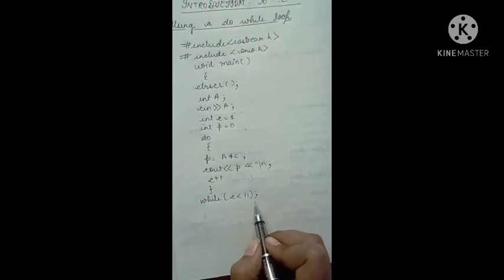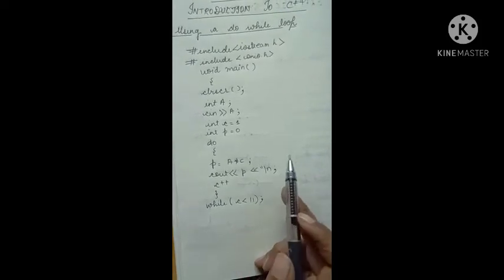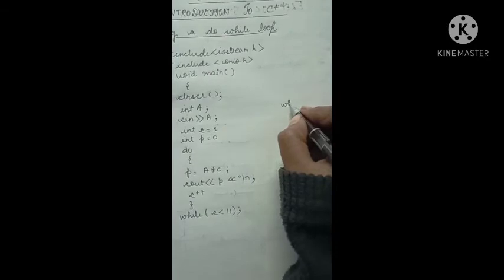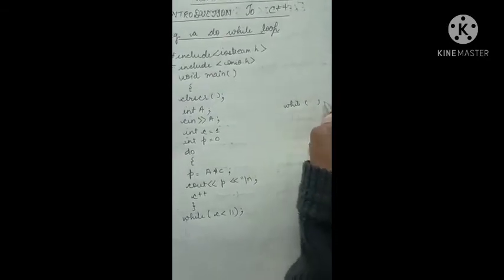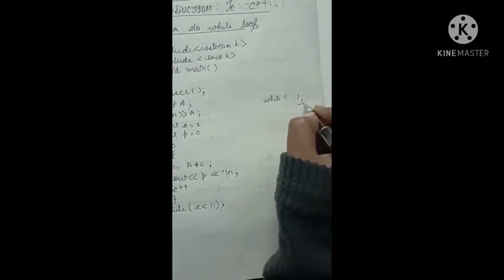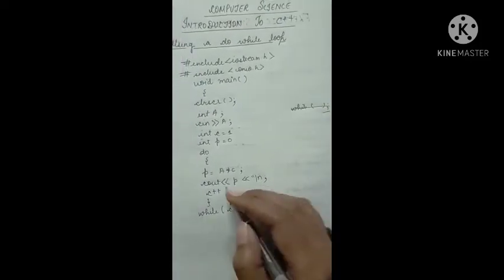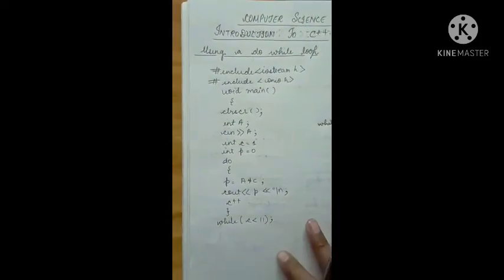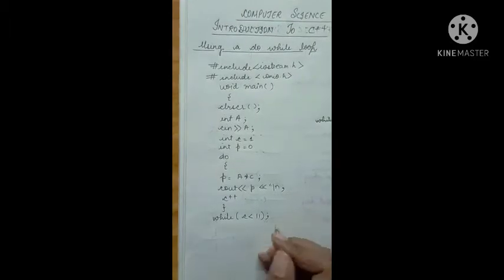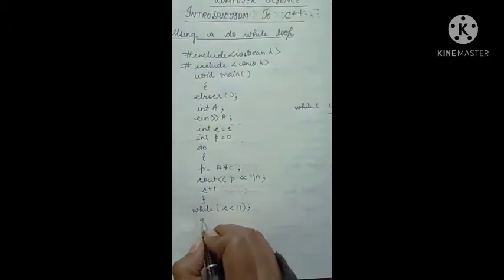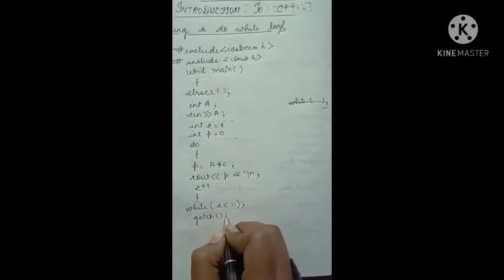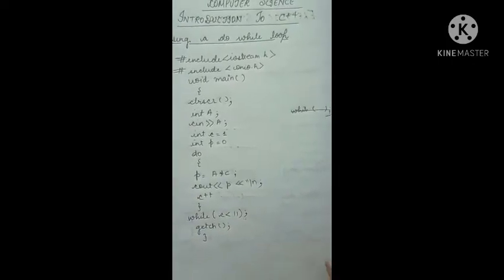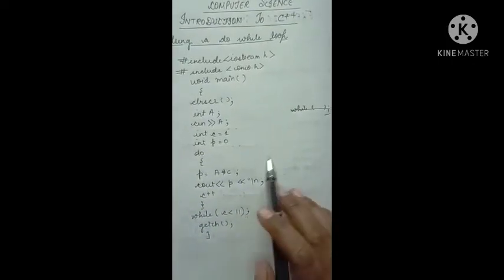We make a semicolon here. In the previous program when we used the while loop we didn't put a semicolon there, but when we use a do-while loop we put a semicolon after the while condition. Now we give getch and then close the program.